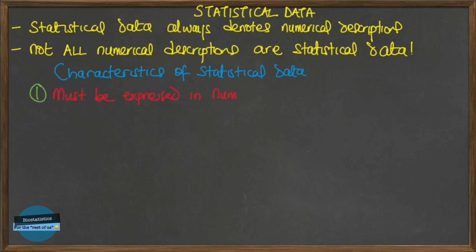The first characteristic is that statistics must be numerically expressed — expressed in numbers. For example, when you say 'Nigeria is now using HL7 messaging' or 'the cases of COVID-19 are reducing in Nigeria,' these do not constitute statistics. But when you say 'in 2022, the number of deaths due to COVID-19 in Nigeria reduced from 1,200 compared to 2,000 in 2021,' this can be called statistics. So for any statement to be called statistics, it must be numerically expressed.